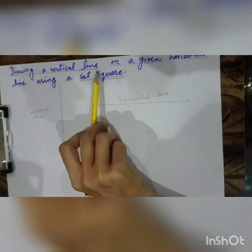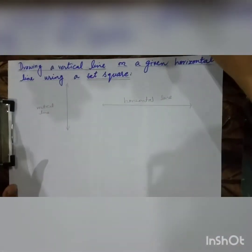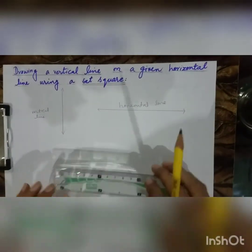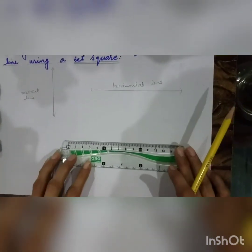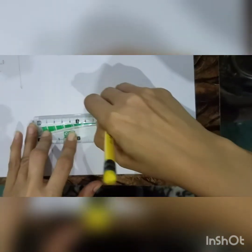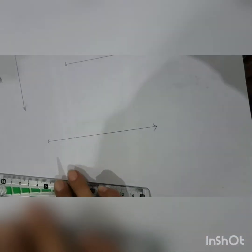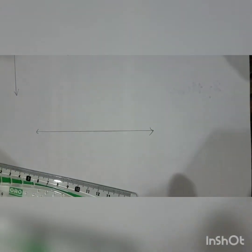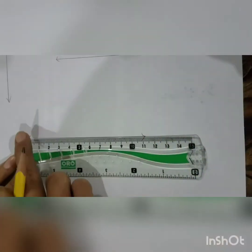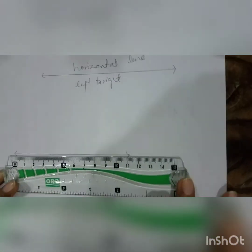Today we are going to focus on how to draw a vertical line on a given horizontal line using a set square. The first step is to draw a horizontal line of any length with the help of a ruler. They have not demanded any required length, so you just draw a horizontal line from left to right.